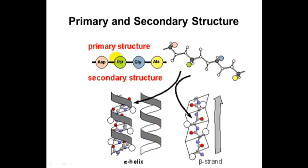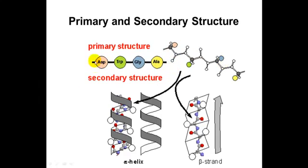There are four levels of protein structure. Primary structure is just the amino acid sequence — for example, aspartic acid, tryptophan, glycine, and alanine — from the amino terminus to the carboxy terminus. So amino acid sequence is primary structure.